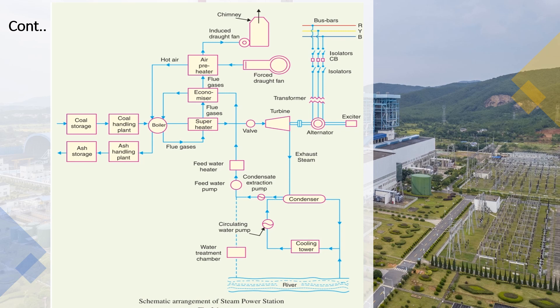The schematic arrangement of a steam power station consists of: coal and ash handling plant, steam generating plant, steam turbine, alternator, feed water system, cooling tower, and cooling arrangement. Within coal and ash handling: coal handling plant, ash handling plant, and ash storage.